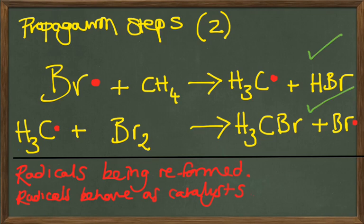So the radicals are constantly being reformed in the pair of propagation steps and they behave as catalysts because there's never any more radical at the end than there is at the beginning and they're both created and destroyed in equal measure during this pair of propagation steps.